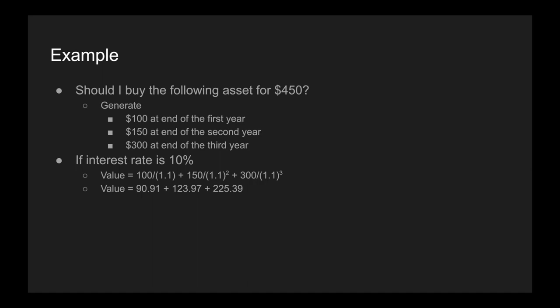If we sum all of those together — now that they're all at the same time period — we get $440.27. Since the price of $450 is greater than this value, I'm not going to buy the asset. And if I'm using derivatives, I'm going to get some short exposure, because I'm expecting the price of this asset to come down and converge to its value over the longer term.